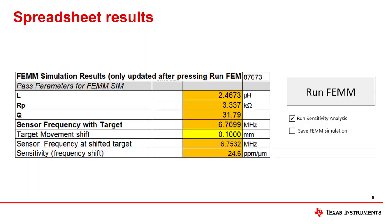The FEM outputs are at the bottom of the spreadsheet and only update after pressing the Run FEM button on the right. There are two checkboxes below this button that allow you to save the simulation and run a sensitivity analysis if desired.